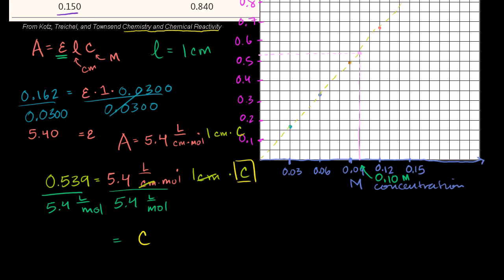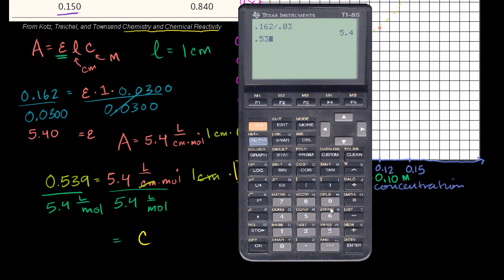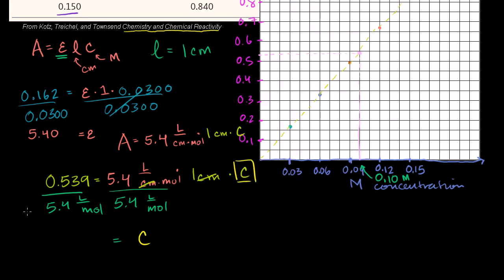The concentration equals 0.539 divided by 5.40, which gives 0.0998 moles per liter. Dividing by liters per mole is the same as multiplying by moles per liter. This exact answer is very close to our eyeballed estimate of 0.10 molar — 0.10 is only slightly more than 0.0998. Hopefully you enjoyed that.